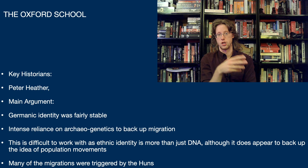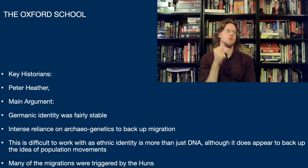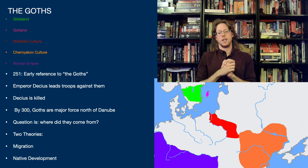There are going to be issues with using archaeogenetic data, especially if you're trying to react against a different interpretation. Going along with all of this, the Oxford School argues that the migrations were largely triggered by the Hunnic invasions — which has serious problems that we'll talk about in more detail when we get to the Hunnic migrations. But for now, I want to focus on the Goths.